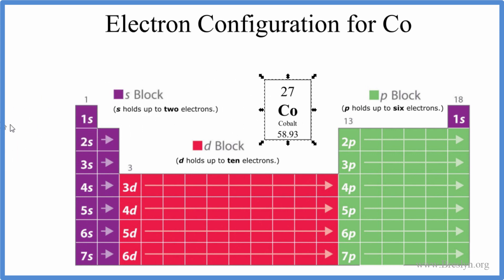On the periodic table, cobalt has an atomic number of 27, so that means it has 27 protons. Because it's neutral, we don't have a plus or minus sign up here, that means that protons are going to equal the number of electrons.